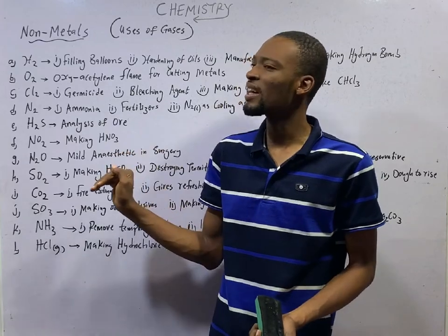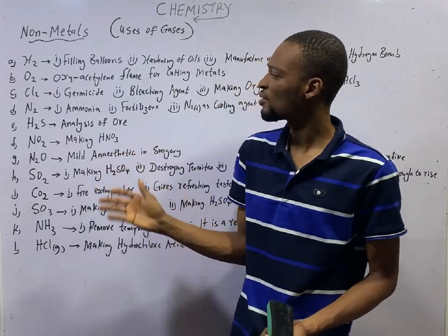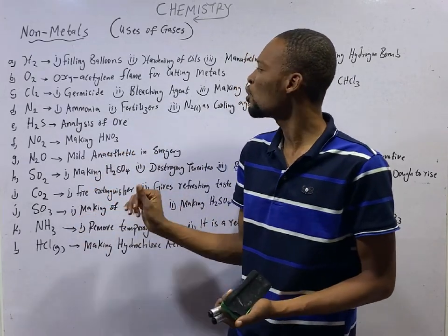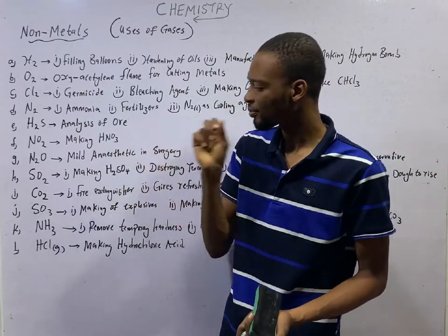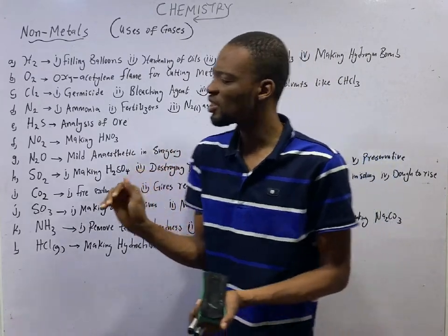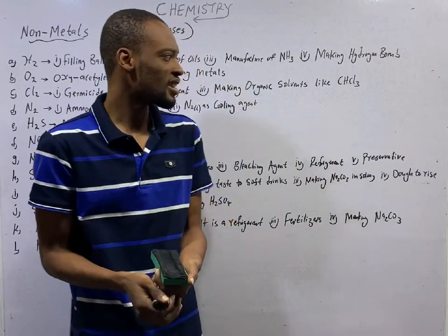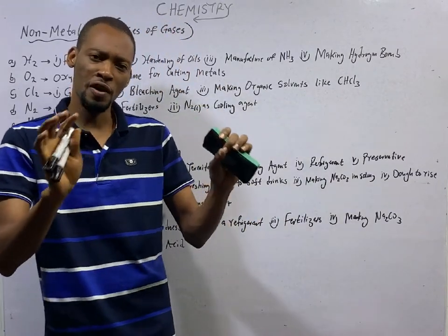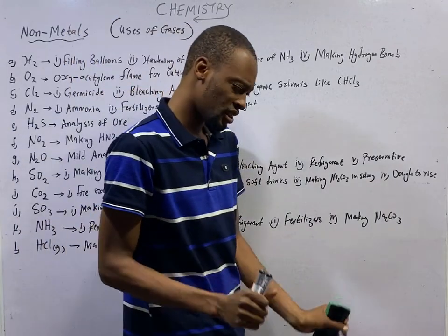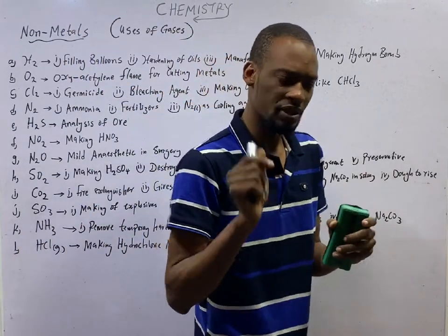The chlorine gas is used as germicide to kill germs and chlorine gas is also used as bleaching agent. Chlorine is not the only gas that is used as bleaching agent. In fact, SO2 is also a bleaching agent.